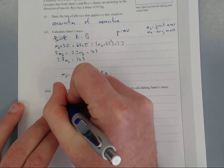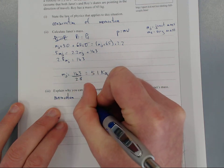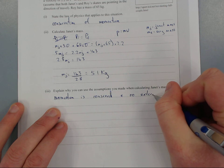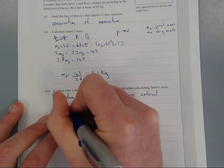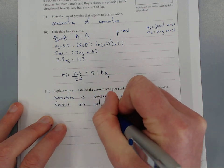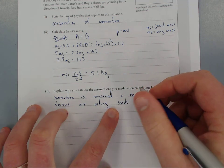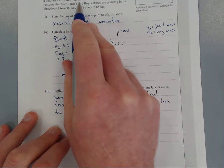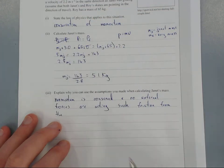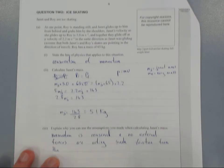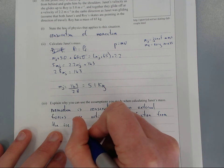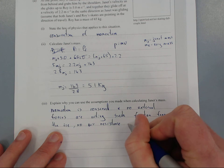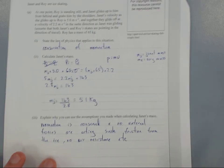Explain why you can use the assumptions when calculating Janet's mass. The assumption was momentum is conserved because there's no external forces acting, such as friction from the ice. We can see it's ice skating from the title. So no friction from the ice and no air resistance. They're really looking for no friction on the ice.